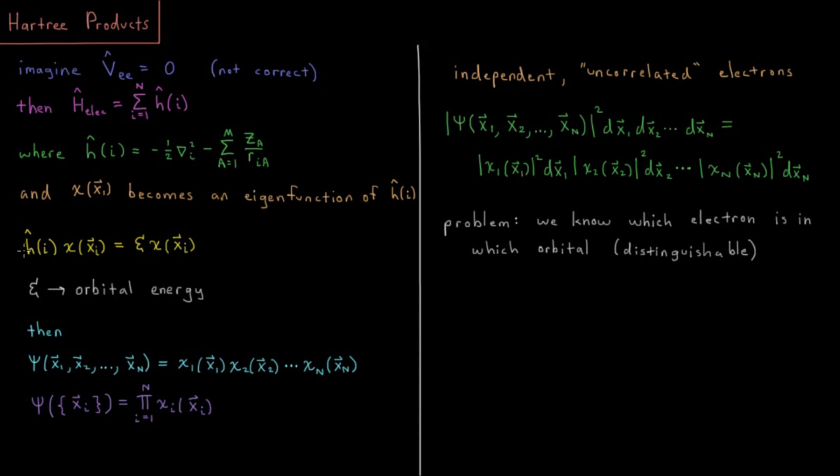We could write that our one-electron operator acting on our spin orbital is equal to some orbital energy times the same spin orbital. This would be an eigenvalue equation where our orbital energy is the eigenvalue, and our spin orbital is the eigenfunction of this particular operator for this electron.